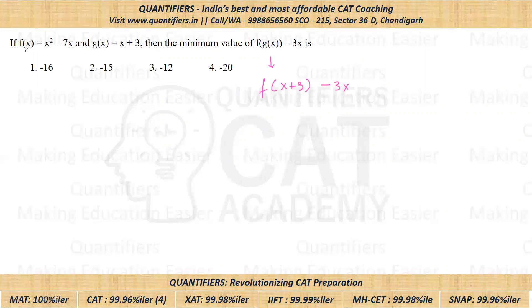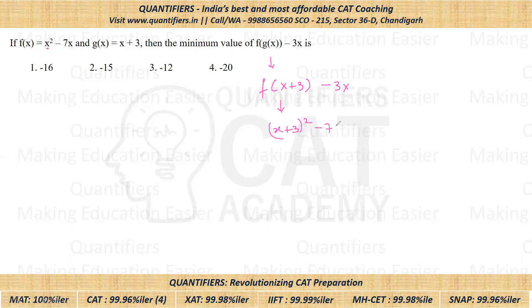Now we know the value of F of X, so from here we can find the value of F of X plus 3. You can just replace X by X plus 3. So if I replace X by X plus 3, I'll be getting (X plus 3) whole square minus 7 times (X plus 3) minus 3 times X.